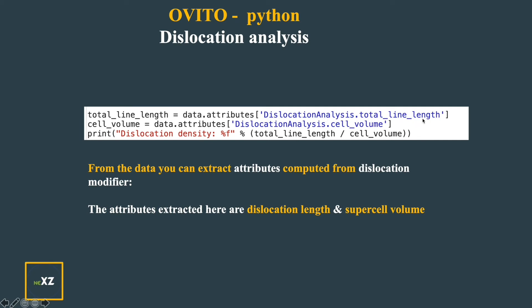So I have here dislocation length and supercell volume. I can use this to find the dislocation density of the simulation cell or the supercell that I am using. So that is useful information.